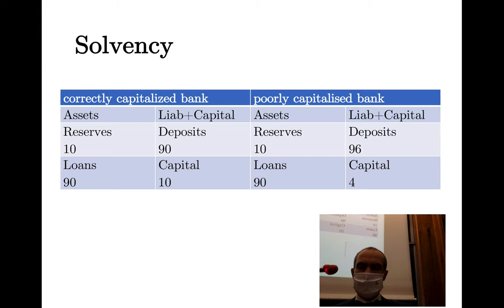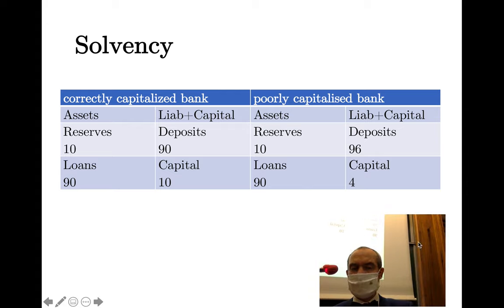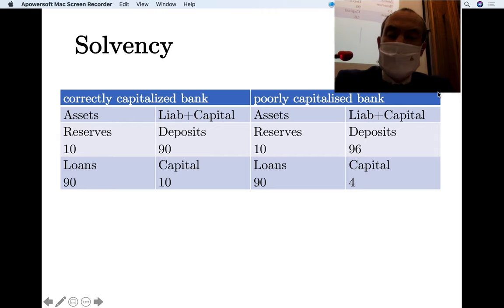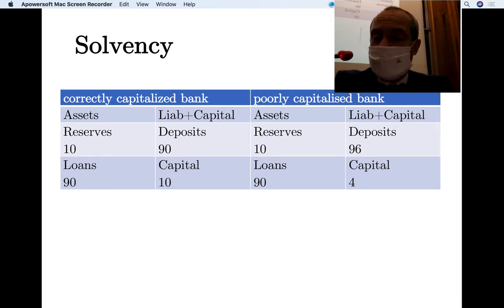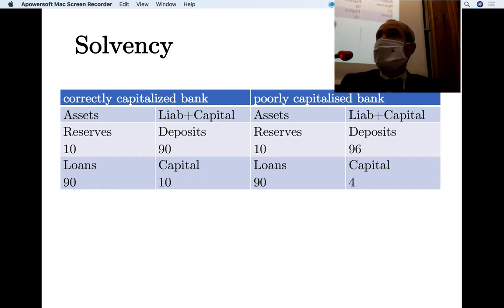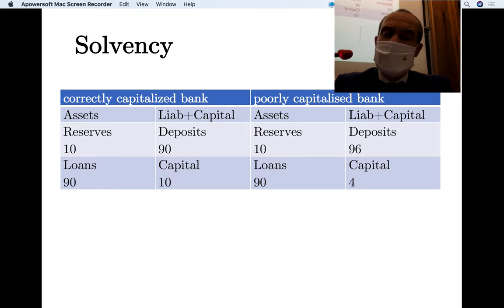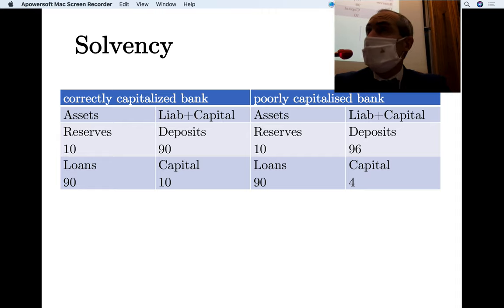You should lend only to solvent institutions. Solvency is easy to define in abstract terms but harder in the real world. Consider two banks each with total balance sheets of 100, asset sides identical: 10 in reserves and 90 in loans. The liability side differs: the correctly capitalized bank has 10 in capital while the poorly capitalized bank has only 4.